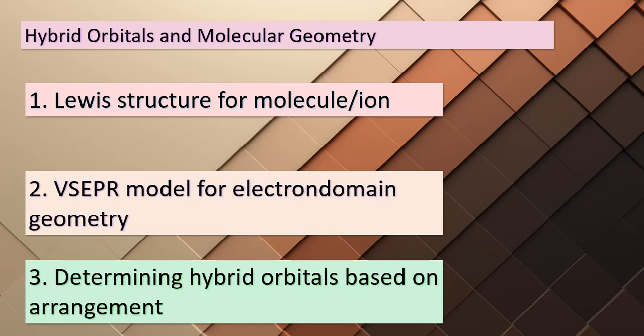Moving on to Step 2, we encounter the VSEPR model, which helps us determine the electron domain geometry around the central atom, giving us insights into the spatial arrangement of electron pairs. Now in Step 3, we specify the hybrid orbitals required to accommodate these electron pairs. The arrangement we obtain from the VSEPR model guides us to the appropriate hybridization, beautifully summarized in Table 9.4, serving as our roadmap in the world of hybrid orbitals.